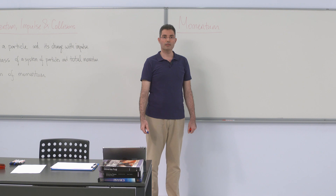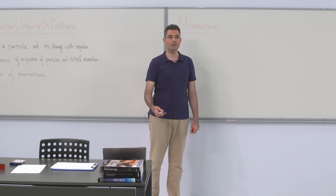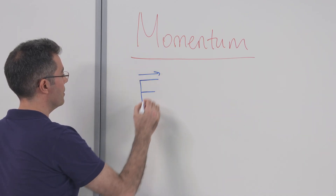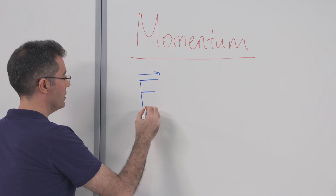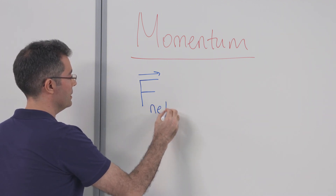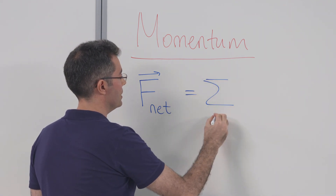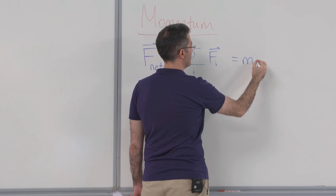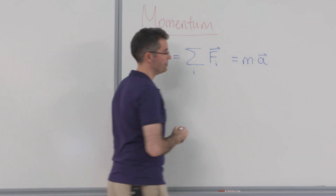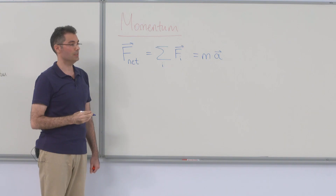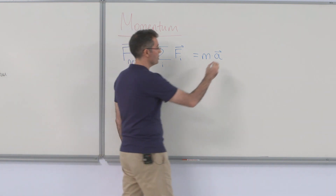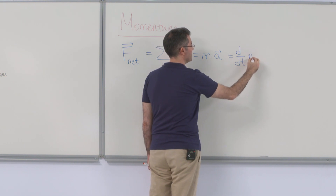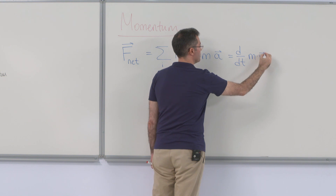Let us start by rewriting Newton's second law. For a particle, Newton's second law says the net force on the particle — which is the sum of all the forces acting on it — is equal to mass times its acceleration. Since acceleration is the derivative of velocity, we can write this as the derivative of mass times velocity.